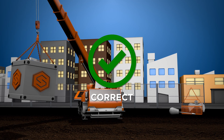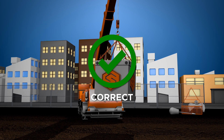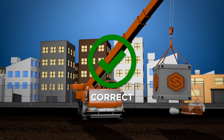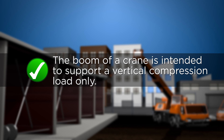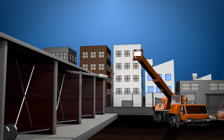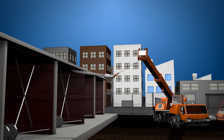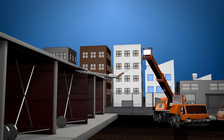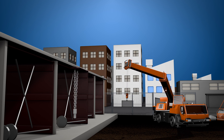The swing function of a crane should only be used to horizontally move a freely suspended load. The boom of a crane is intended to support a vertical compression load only. When the swing function is used to pull a load in a horizontal manner, side loading occurs and will again result in catastrophic failure of the structure.